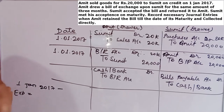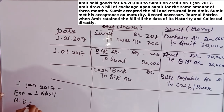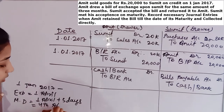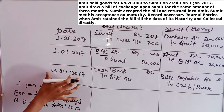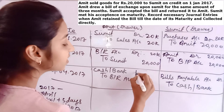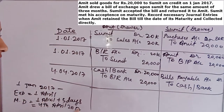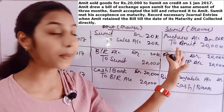So we write 4th April 2017 as the maturity date. Third entry on 4th April 2017: Cash Account Debit to Bills Receivable Account, 20,000 and 20,000. Remember to write the narration: being goods sold to Sumit on credit; being goods purchased from Amit on credit. Sumit made his acceptance on maturity. Here is the bank account — 20,000.